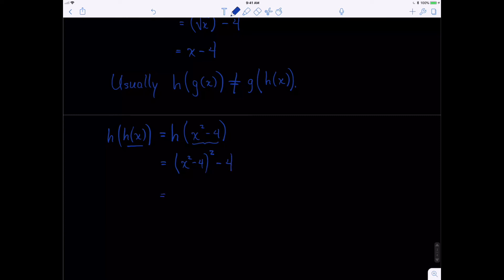So now what we need to do is we need to clean this up. We could stop there, but let's continue. This becomes x squared minus 4 times x squared minus 4 minus 4. Then we need to distribute our parentheses. So x squared times x squared becomes x to the fourth. x squared times negative 4 is minus 4 x squared. And then we repeat with the bottom ones. Minus 4 times x squared is minus 4 x squared.